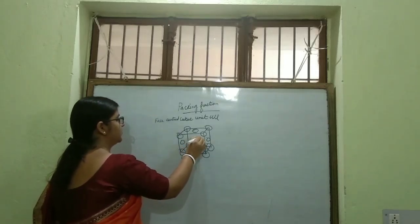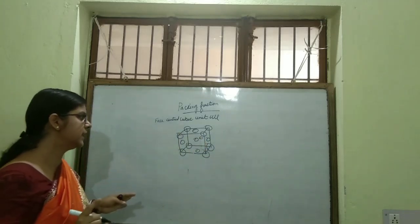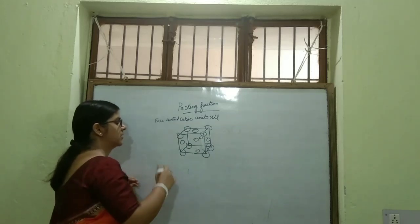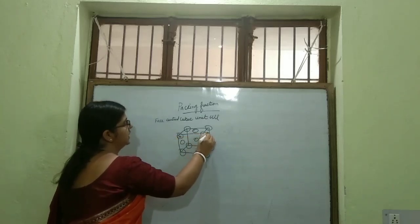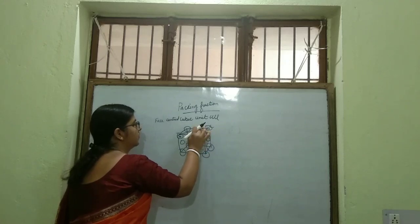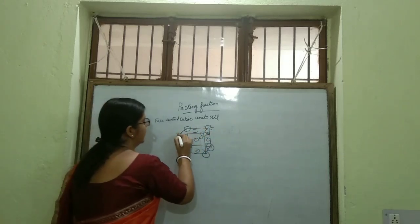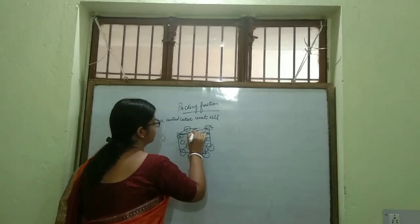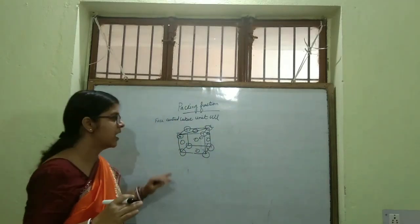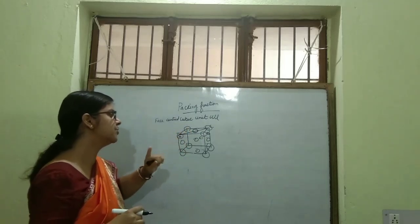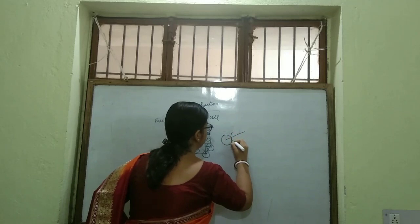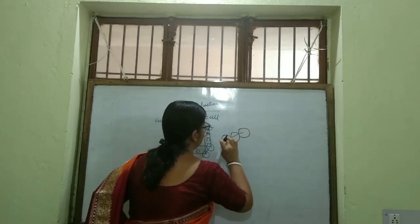To derive the packing efficiency value, we will have to do some construction. Draw the face diagonal — label it A, B, C. These three spheres are actually touching each other along the face diagonal, which I could not show in the figure. So the value of the face diagonal AC will be R + 2R + R = 4R.